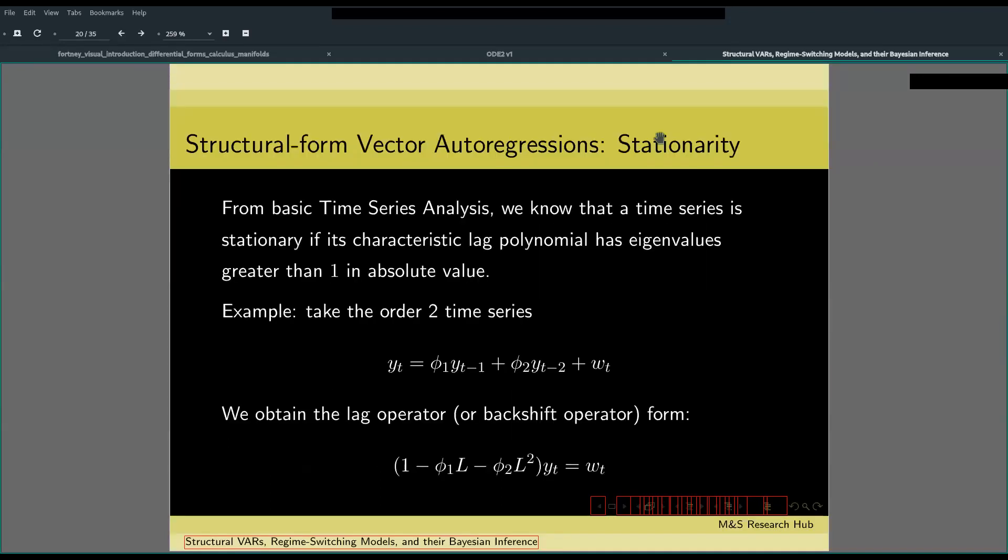Now from basic time series analysis, we know that a time series is stationary if its characteristic lag polynomial has eigenvalues greater than one in absolute value.